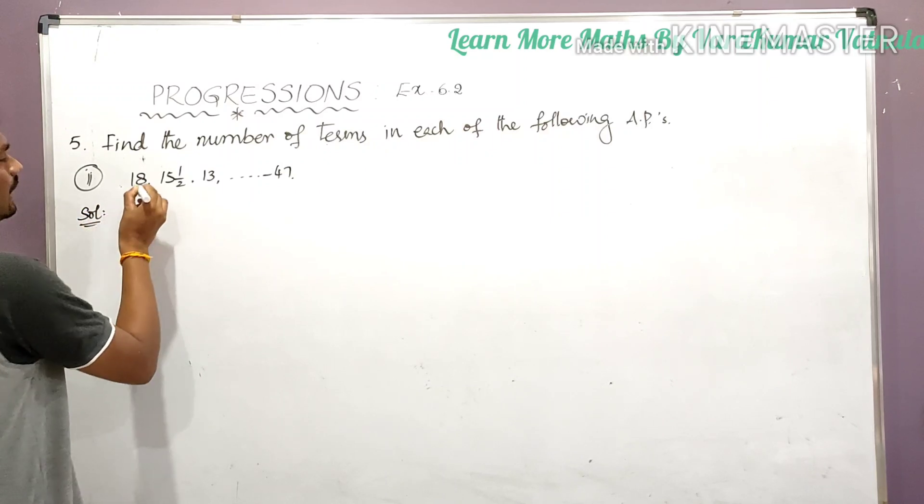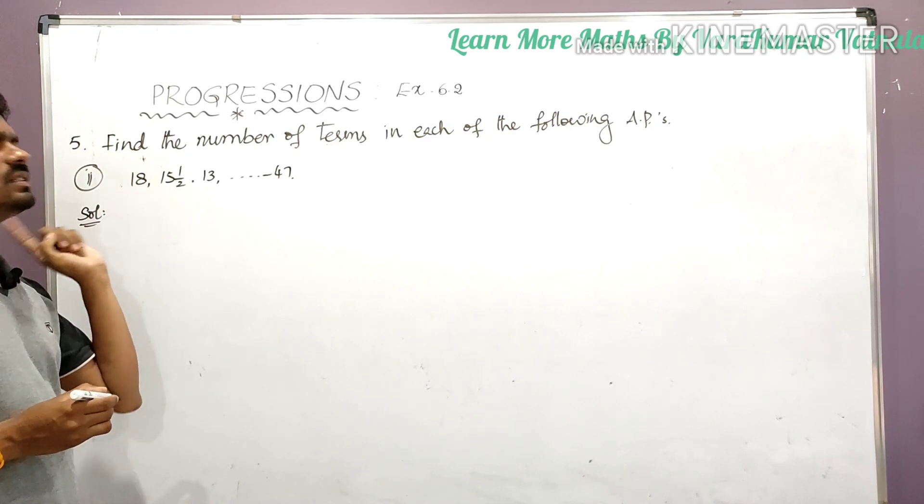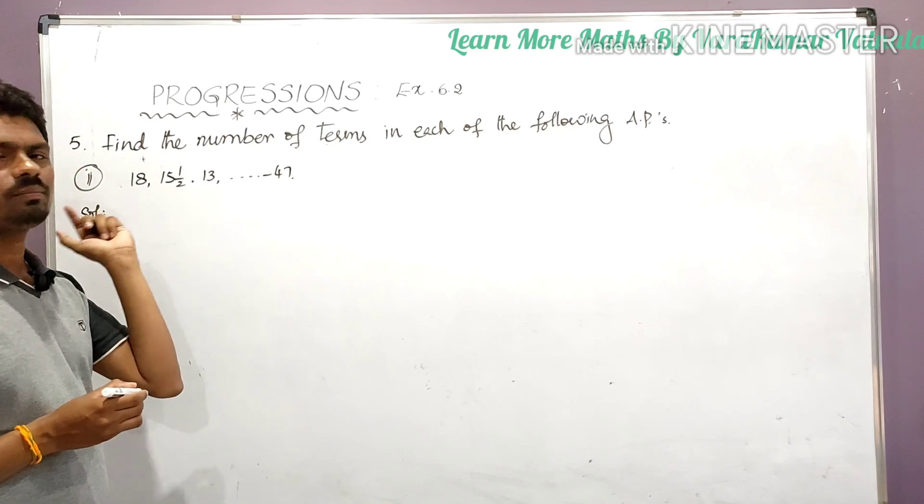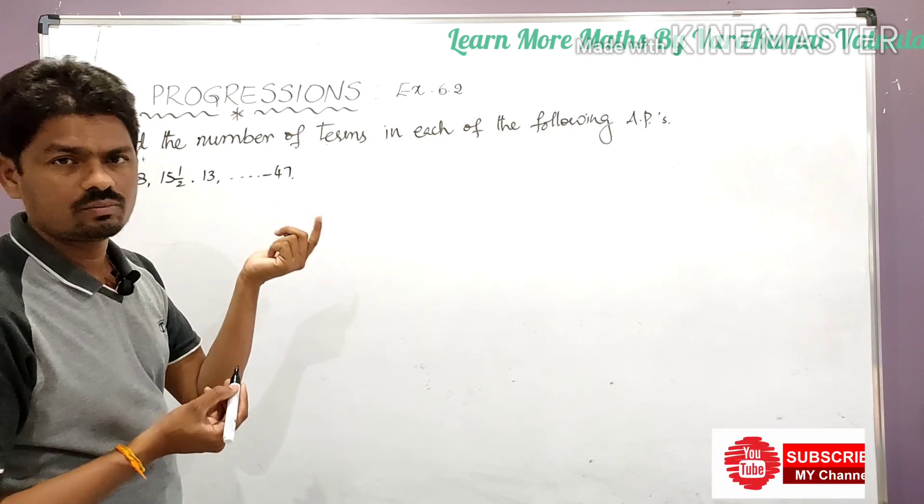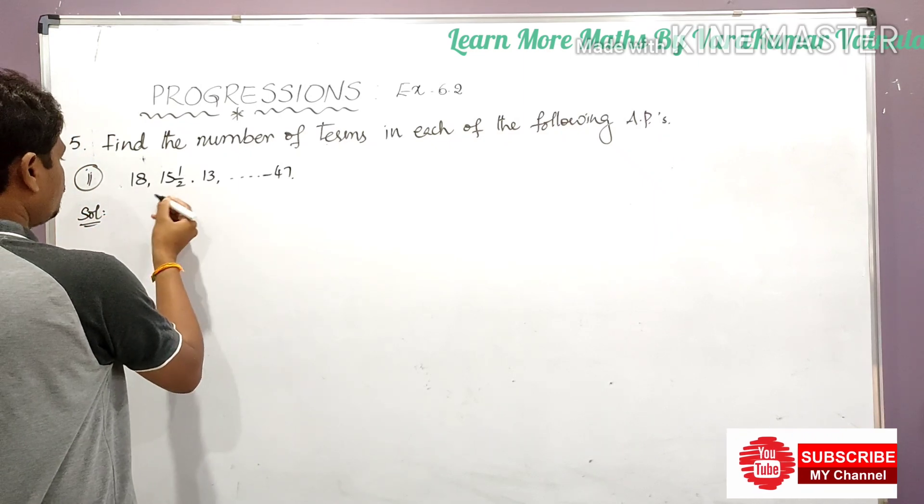So let this be the first term. See here, 18 is the first term and we have to find the common difference since it is in AP. So the common difference will be same in every successive terms, the difference.